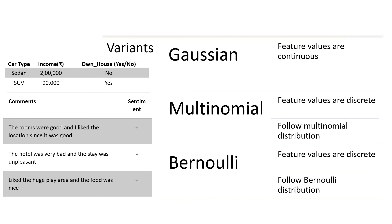Some types of Naive Bayes models are: Gaussian Naive Bayes, used when the feature values are continuous — for example, income is continuous data. If the feature values follow a multinomial distribution, i.e., if we consider the frequency of occurrence of features, the values are discrete and we use Multinomial Naive Bayes. If we only consider the occurrence or non-occurrence of features, then we use Bernoulli Naive Bayes.